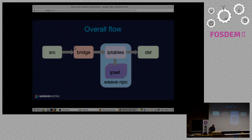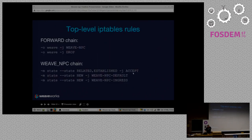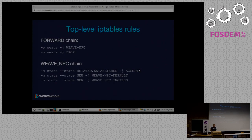Second question: what happens if we implement a new network policy that blocks a connection that was already established? It does not drop it — because of that performance hack where we don't impose the lookup overhead on every packet, we only do it on connection establishment. So if you manage to establish a connection, that will stay active. We did discuss this in the Kubernetes SIG network committee, and we felt that if the bad guy got in already, that's too bad — reboot the machine or something. Dropping already active connections is not within the scope of Kubernetes network policy.